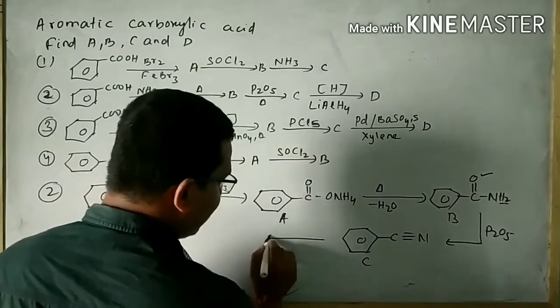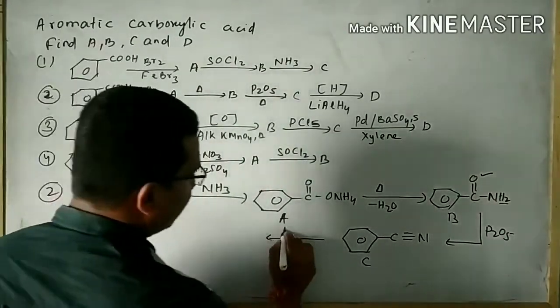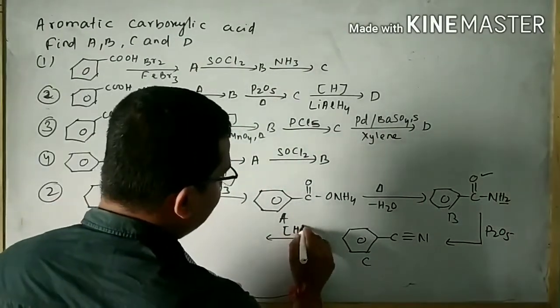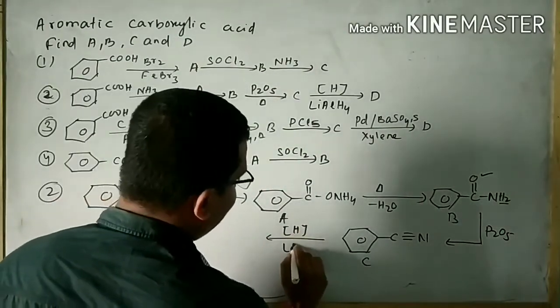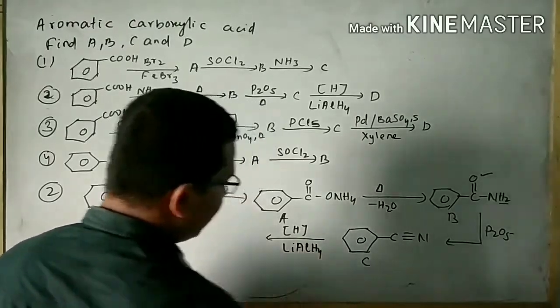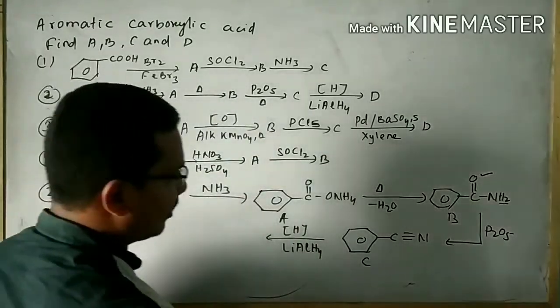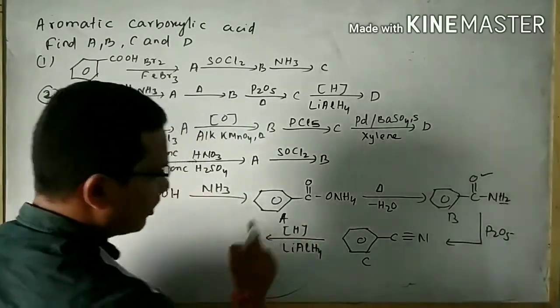Again, cyanobenzene is subjected to reduction with lithium aluminium hydride. That means lithium aluminium hydride, which supplies nascent hydrogen.